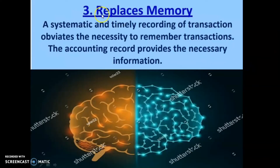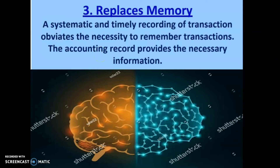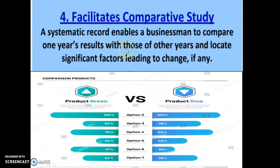The next advantage is replaces memory. It is not easy to recall or memorize all the transactions taking place in the organization, so we have to put it into paper. A systematic and timely recording of transactions is necessary to remember transactions. The accounting record provides the necessary information, and we can use the same record whenever it is required.